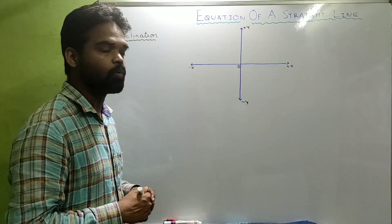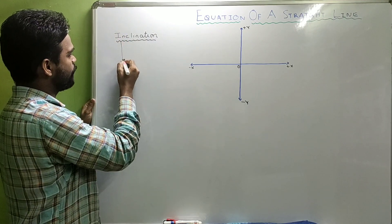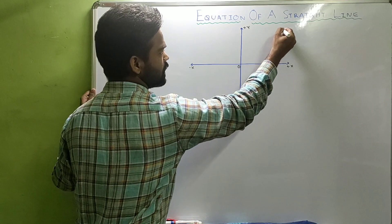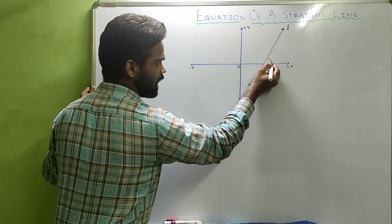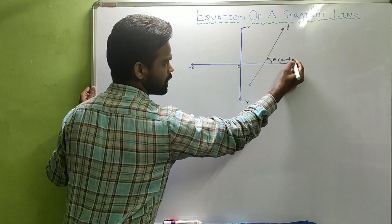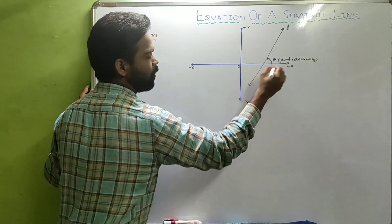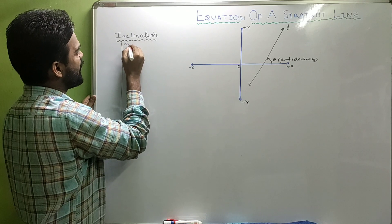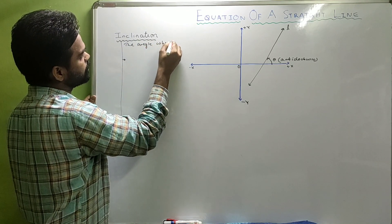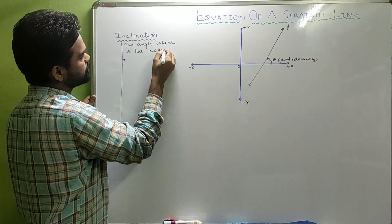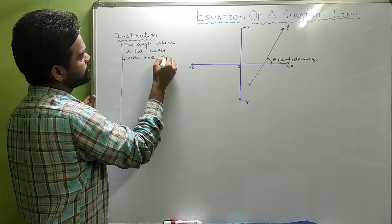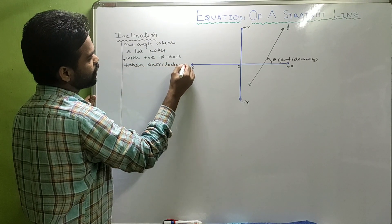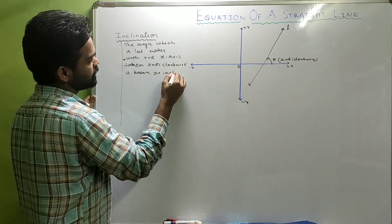Let's get started. What do we mean by inclination? Suppose in a coordinate plane we have a line L. It makes an angle theta anticlockwise with the positive x-axis. This is known as the inclination of the line — the angle which a line makes with the positive x-axis, taken anticlockwise.